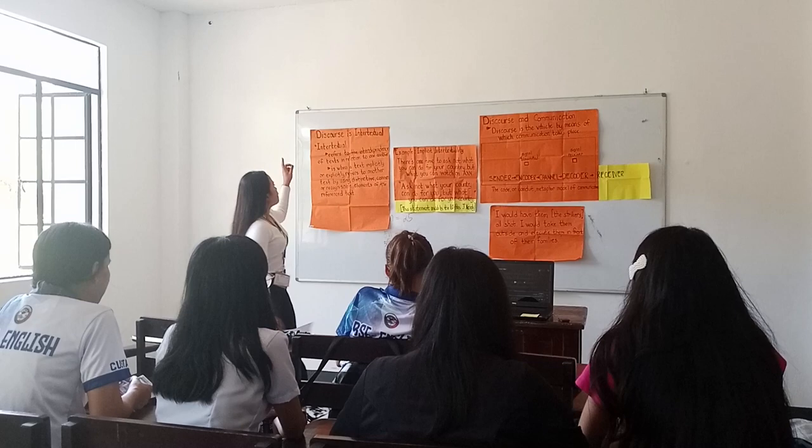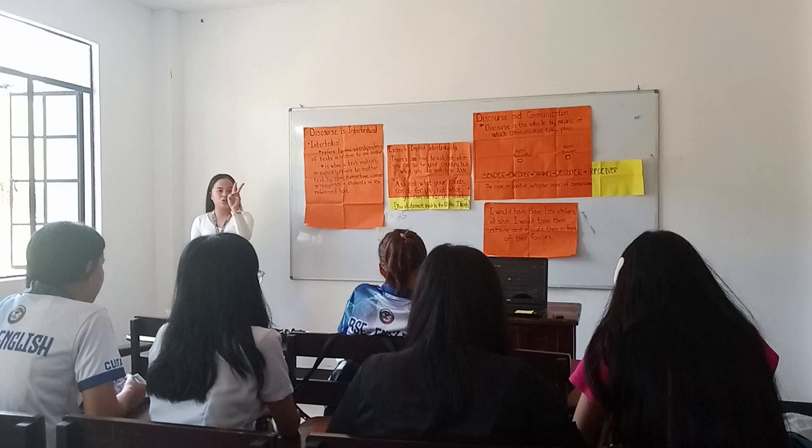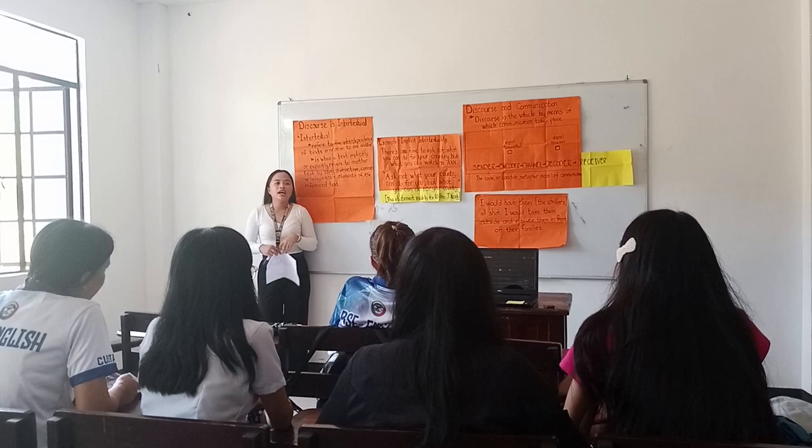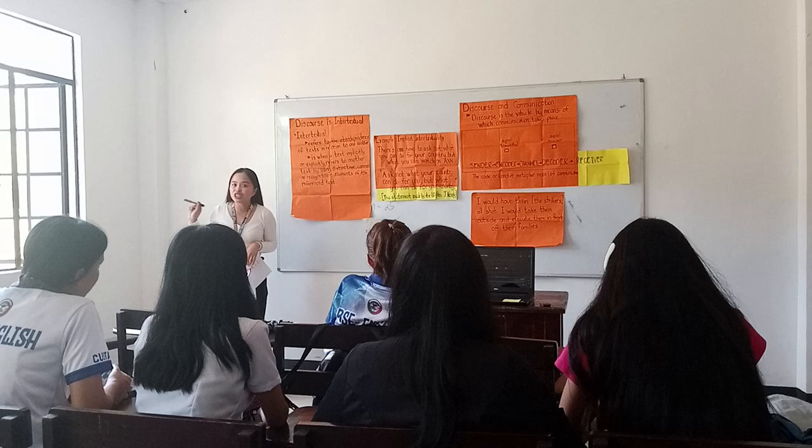In intertextuality, there are actually two categories, which is explicit and implicit. When we say explicit, the author theoretically indicates where the text or the words originate from.